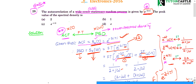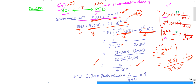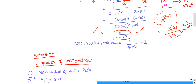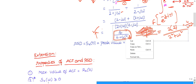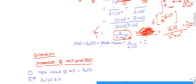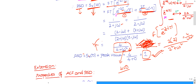The question asks not for the PSD itself but for its peak value — the maximum value. S_x(ω) = 4/(4 + ω²) has a bell-shaped curve, and is maximum when ω is minimum. When ω = 0, S_x(0) = 4/4 = 1. For any nonzero ω (positive or negative), ω² > 0 and the value drops below 1. So the peak value is 1, and the correct answer is option B.